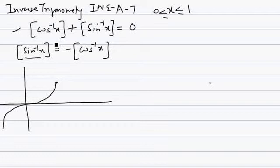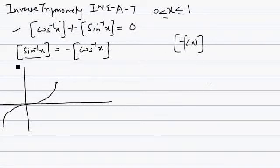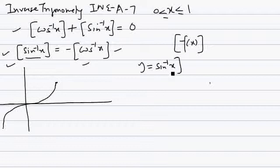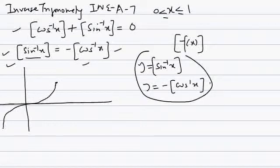We will prefer to do it graphically because we know how to draw a graph of greatest integer of f(x) using the graph of f(x). Using this technique, we will draw a graph of greatest integer of sin inverse x as well as greatest integer of cos inverse x, and then we plot minus greatest integer of cos inverse x. When we replace y by minus y, we reflect in the x-axis. So we draw y equal to greatest integer of sin inverse x and y equal to minus greatest integer of cos inverse x, and figure out where the two graphs intersect.